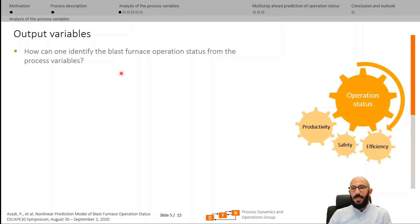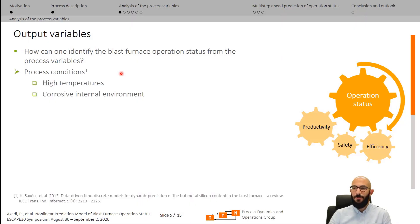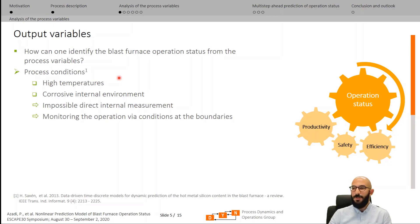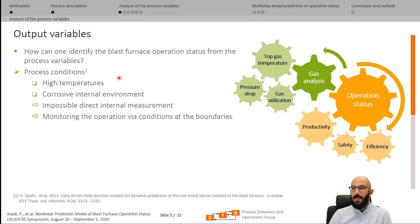The question is how can one identify the blast furnace operation status from the process variables. The blast furnace operates at high temperatures with corrosive and harsh internal environments. Therefore, relying on direct internal measurements is impossible, and we need to restrict ourselves to monitoring the blast furnace operation status by conditions at the boundaries. One of the most representative boundaries is the gas analysis in terms of top gas temperature, pressure drop, and gas utilization.